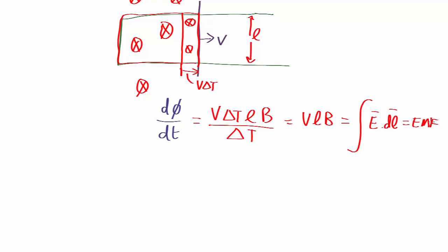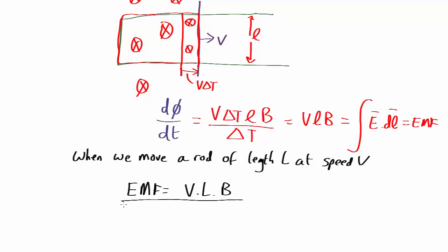So what we found is when we move a rod of length l at speed v, we get an electromotive force equal to its velocity times its length times the magnetic field it's moving through. And that turns out to be a fundamental law of physics used in generators. For example, when you rotate wire loops or spin them around, you get this voltage produced.